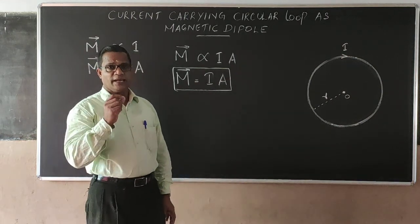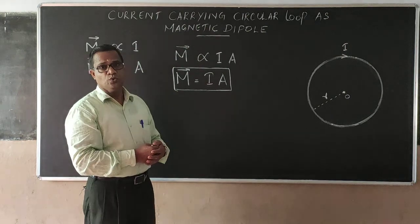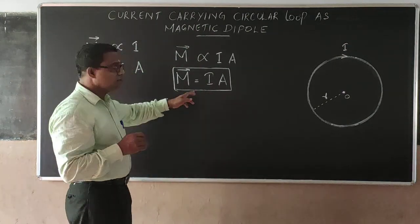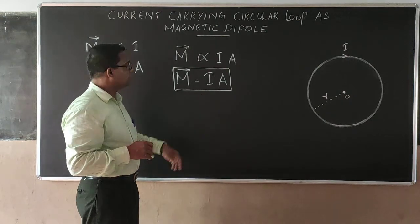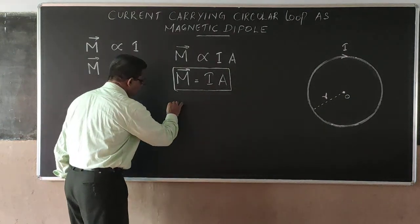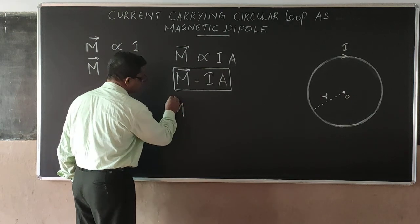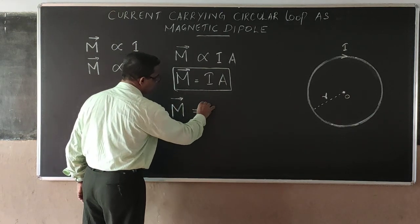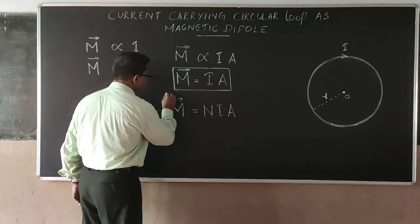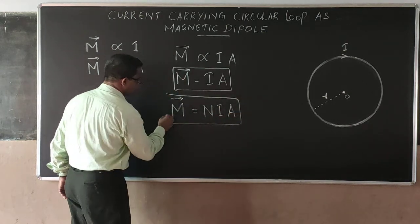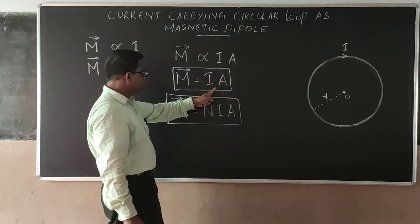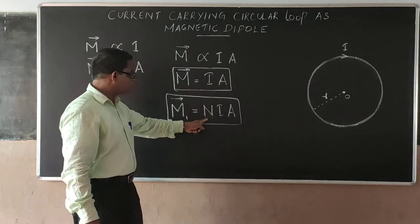Now suppose there are N turns in the loop. Each loop carries the same current I, and therefore the total magnetic moment in that case will be equal to N times I times A. So M = IA is for a single loop, and M = NIA is for N turns.